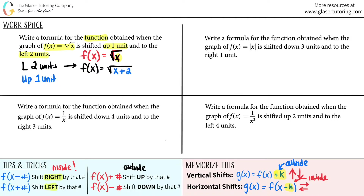Now for the up-and-down shift: going up means a plus sign on the outside. So I don't change anything inside; I just tack it on. This gives f(x) equals the square root of (x plus 2) plus 1. Notice the plus 1 is on the outside of the overall function — I didn't touch anything inside the square root.